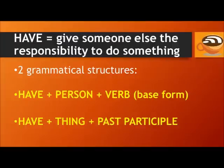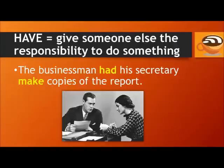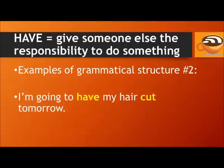Our next causative verb is 'have.' This means to give someone else the responsibility to do something, and there are two possible grammatical structures. Structure one: have + the person + the base form of the verb. Structure two: have + the thing + the past participle. Examples of structure one: 'I'll have my assistant call you to reschedule the appointment.' 'The businessman had his secretary make copies of the report.'